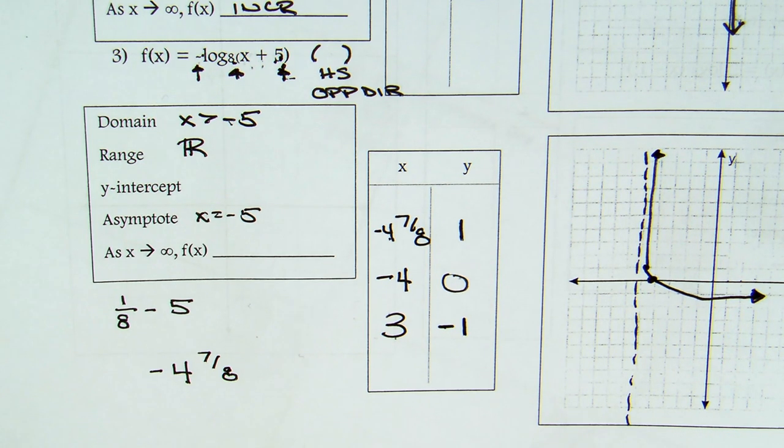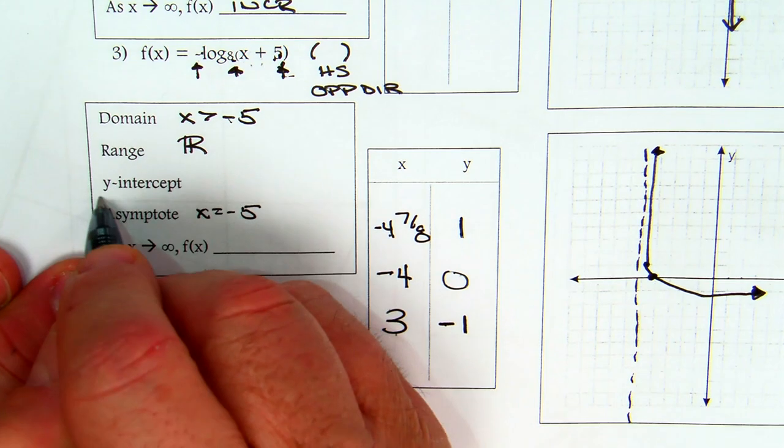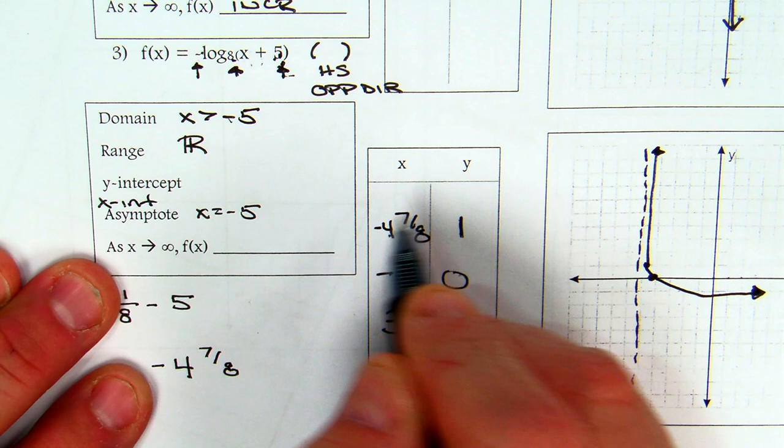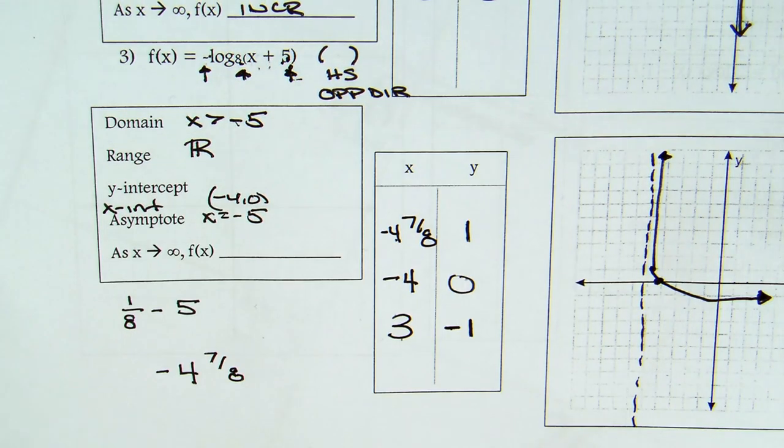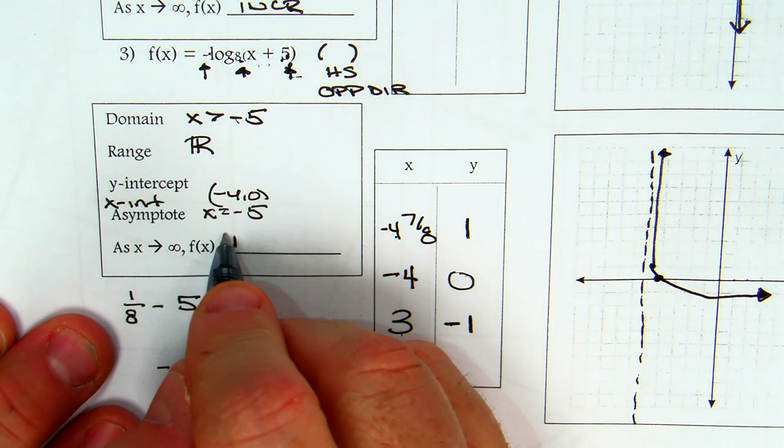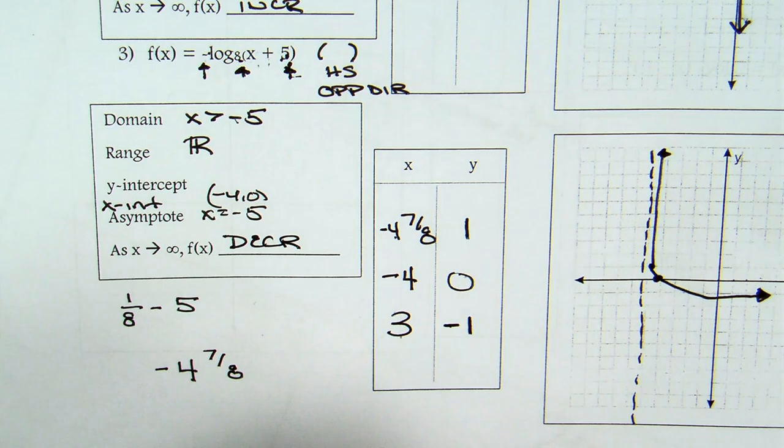Everything is to the right of that line, which means my domain is greater than. So x is greater than negative 5. My range is all real numbers. Now, the y-intercept exists in that. When we go back and work on change of base and do all that, then we'll come back and do y-intercept for that. All right, but let's say we ask for the x-intercept. That would be negative 4 and 0. For the time being, we're not going to worry about finding the y-intercept. And the other major difference with that one, instead of going up, it's going down because of the negative. So instead of increasing, that's going to be decreasing.